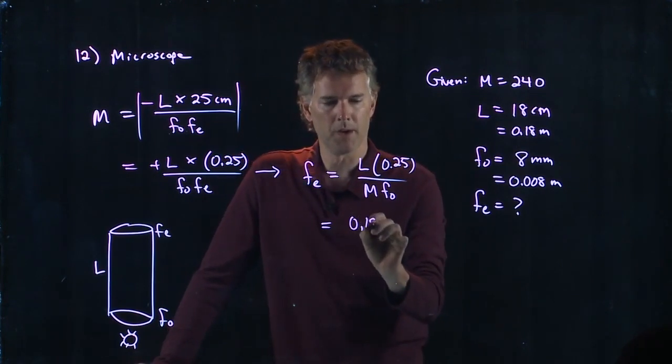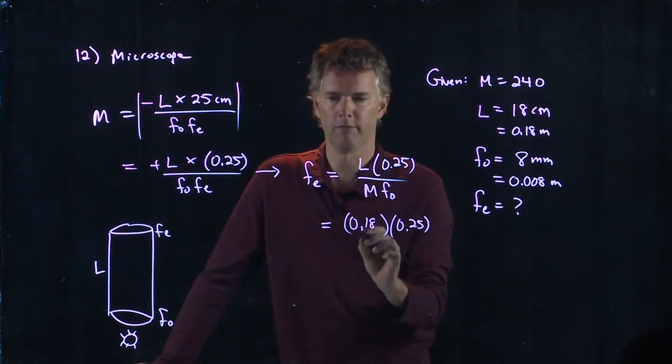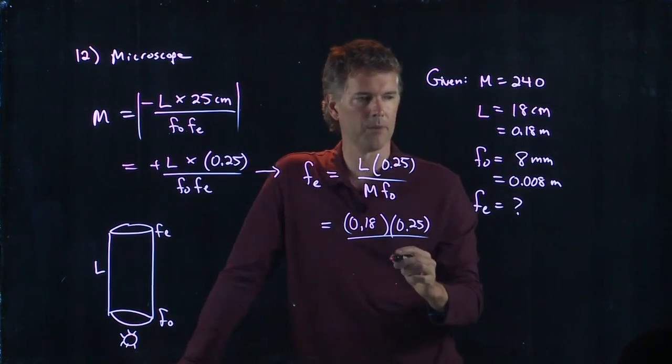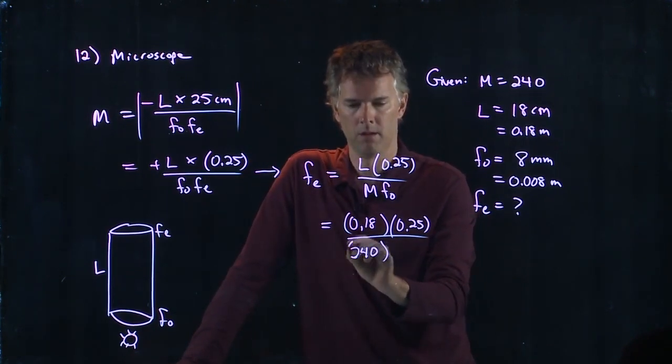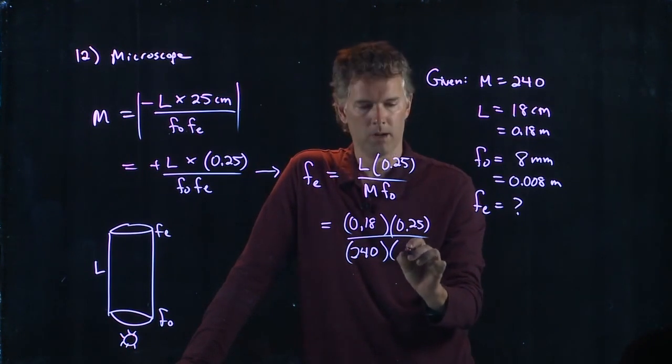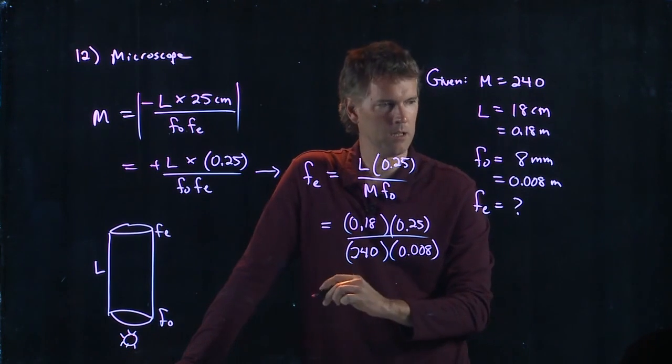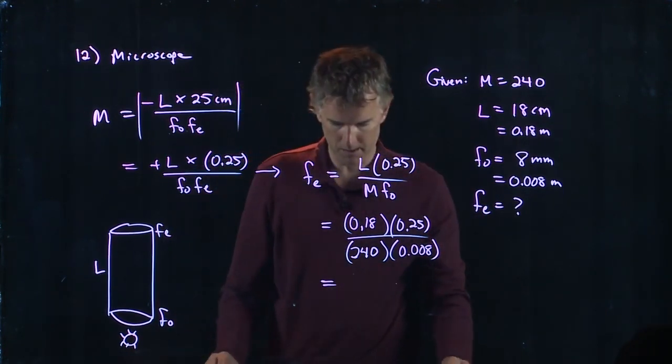0.18 for L, 0.25 for the near point of the eye. That's where that 0.25 comes from. M is 240. FO was 0.008. And now if you punch all that into your calculator, tell me what you get.